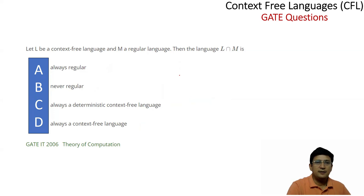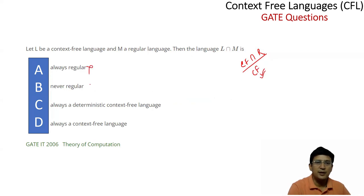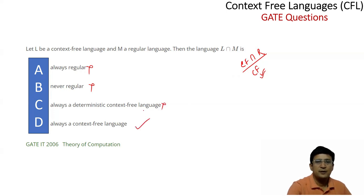Let's take another question: if L is a context-free language and M is a regular language, then what is L intersection M? From the table we've seen, the intersection of a context-free language with a regular language yields a context-free language. So the answer 'always context-free' is correct. We cannot say it is always a deterministic context-free language, so the correct option is simply context-free.